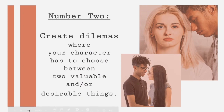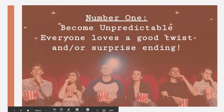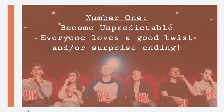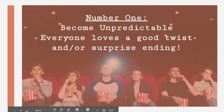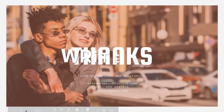Number 2: create dilemmas where your character has to choose between two valuable and or desirable things. Number 1: become unpredictable. Everyone loves a good twist and or surprise ending. Thanks for watching. Hope this helps.